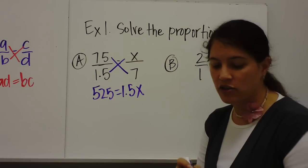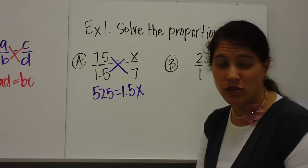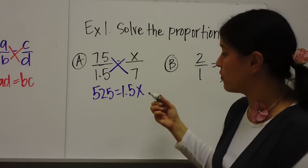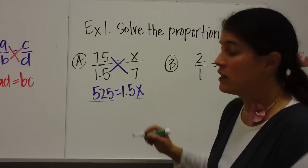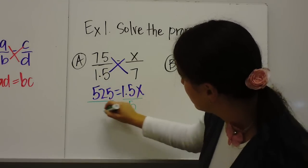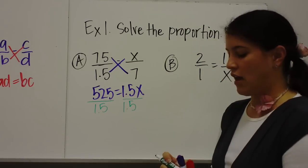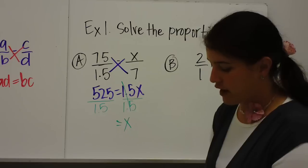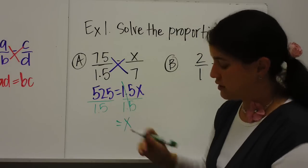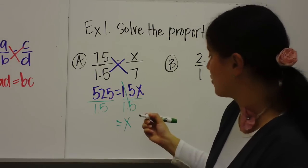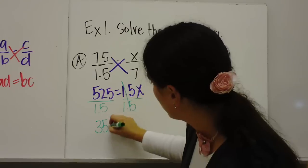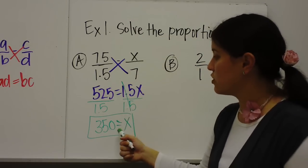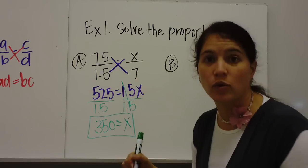So now I have a multiplication equation. It's been a while since we've done equations, but hopefully you remember, we want to get X by itself. So in order to get X alone, we're going to have to divide both sides by 1.5. And when you divide both sides by 1.5, we're going to type in 525 divided by 1.5. And we get 350. So that means X is equal to 350.